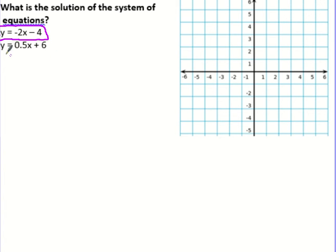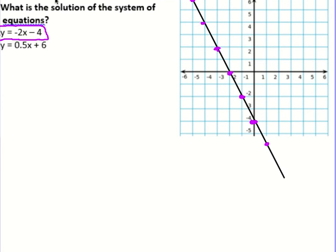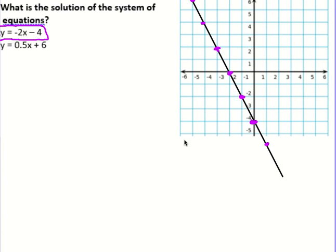I'm going to graph this first one in purple — negative two x minus four. I'm going to start at negative four. I can go down two and over one, but I also have to go up two and over one. With systems, unlike regular graphing, we need a lot of points because we're looking for a point of intersection, so we need accurate graphs. There's my graph for y equals negative two x minus four.